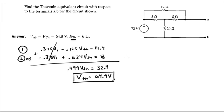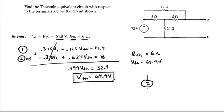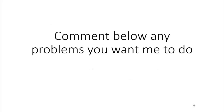We have found both Thevenin values: R_Thevenin = 6 ohms and V_Thevenin = 64.9 volts. The equivalent Thevenin circuit is a 64.9-volt source in series with a 6-ohm resistor. Please comment below if you want me to do any problems and I'll be happy to help — thank you!